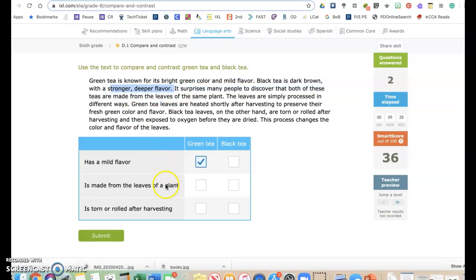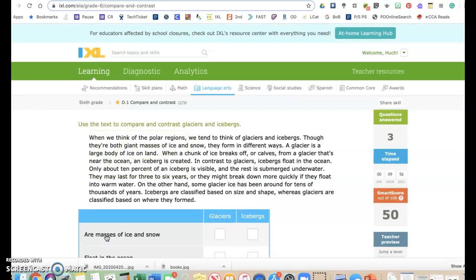Is made from the leaves of a plant. I saw that it says, discover that both of these teas are made from the leaves of the same plant. So, both of these would be there. Is torn or rolled after harvesting. Here it says torn. So, black tea leaves are torn or rolled after harvesting. So, just black tea. There you go.